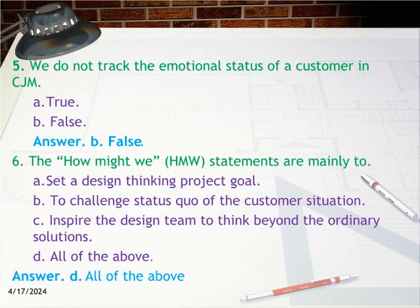Question 6: The 'How Might We' (HMW) statements are mainly used to — Option A: Set a design thinking project goal. Option B: Challenge the status quo of the customer situation. Option C: Inspire the design team to think beyond ordinary solutions. Option D: All of the above.